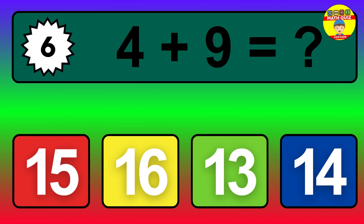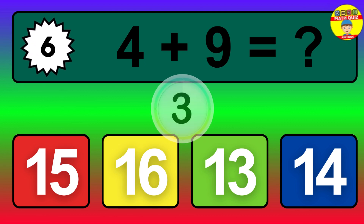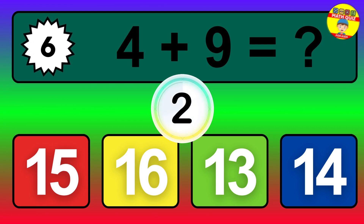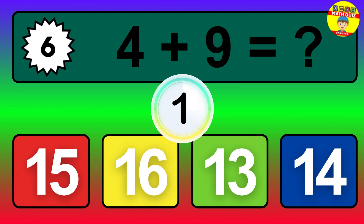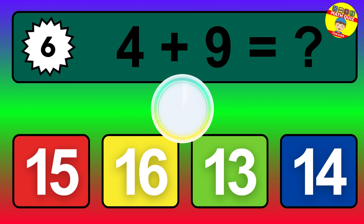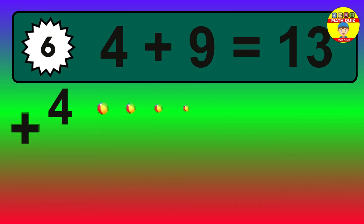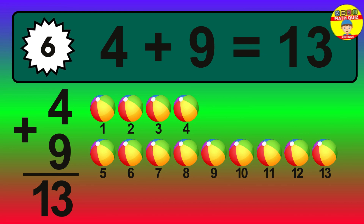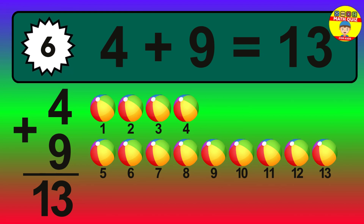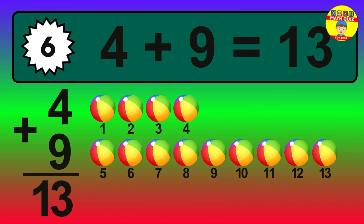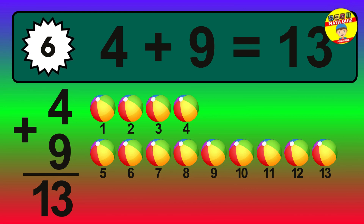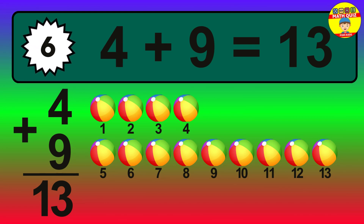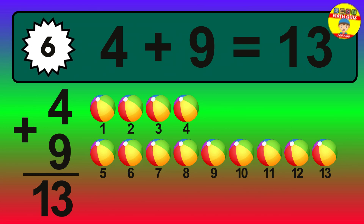Question 6. 4 plus 9 equals what? The answer is 4 plus 9 is 13. Let's count it: 1, 2, 3, 4, 5, 6, 7, 8, 9, 10, 11, 12, 13.